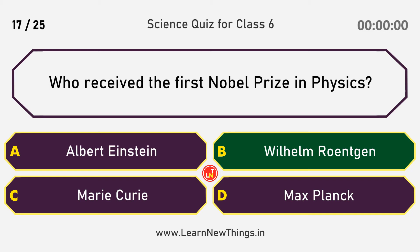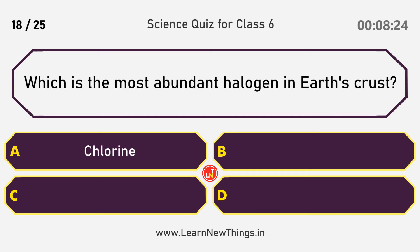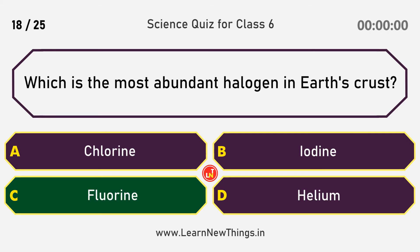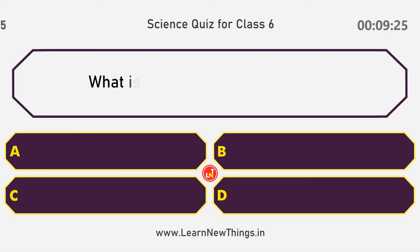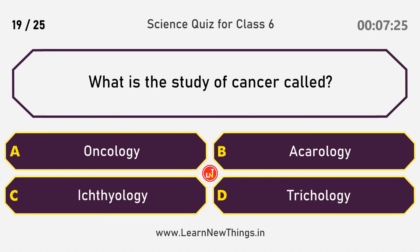Who received the first Nobel Prize in physics? Answer: Wilhelm Röntgen. Which is the most abundant halogen in the Earth's crust?